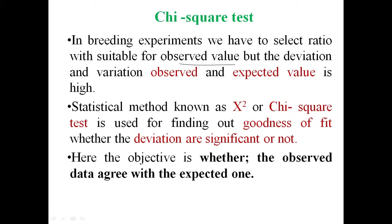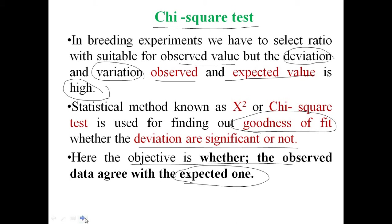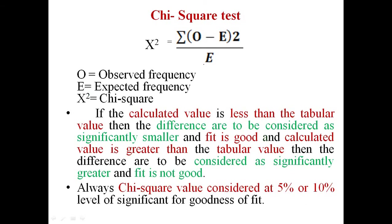What we are exactly getting is a deviation and variation — remember there is a deviation and variation between observed and expected values, and this can be high. By using the chi-square test, we can find out whether these deviations are significant or not, or whether the data fits well. That's why this test is also known as the goodness of fit test, and our main objective is to determine whether observed data agrees with the expected one.